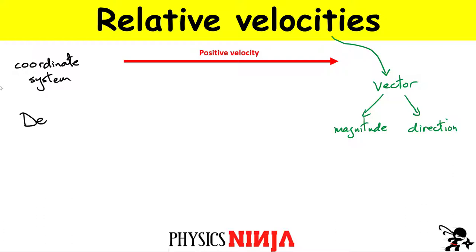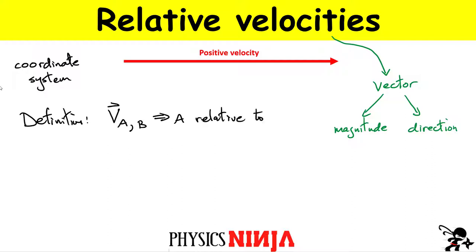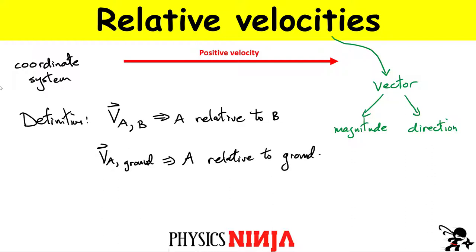I need to write down a definition. When writing relative velocities, we write something like V(a, b) — the velocity of one object relative to another. The definition: V(a, b) is the velocity of object A relative to object B. For example, V(a, ground) means the velocity of object A relative to the ground. V(a, c) means the velocity of A relative to C.